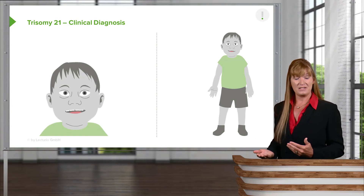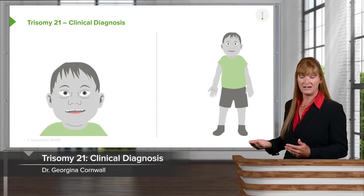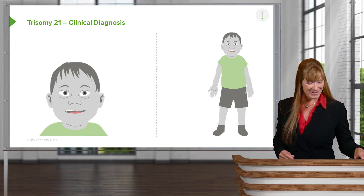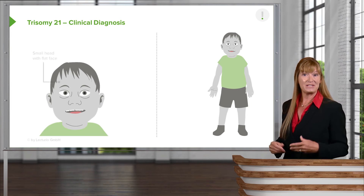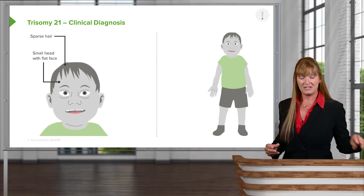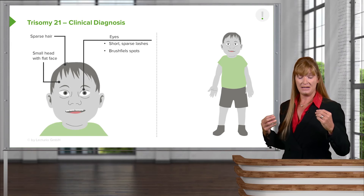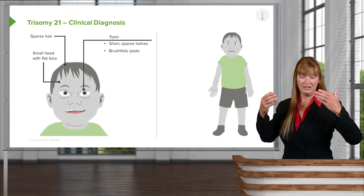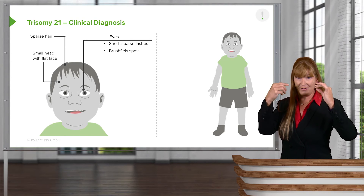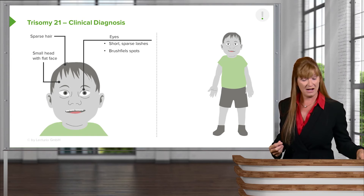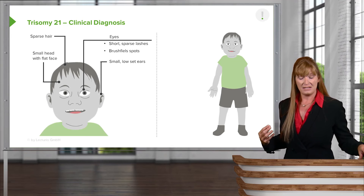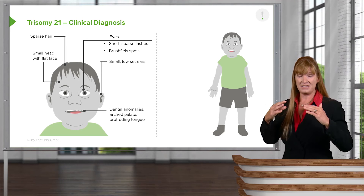We'll take a specific look at the clinical features we might see in a Down syndrome child. In general, we'll see a smaller head, smaller face, fairly sparse hair, as well as changes to the eyes — fairly short eyelashes as well as bright Brushfield spots, which are small white spots around the iris of the eye. The ears are small and fairly lower set, with some abnormalities in the palate as well.